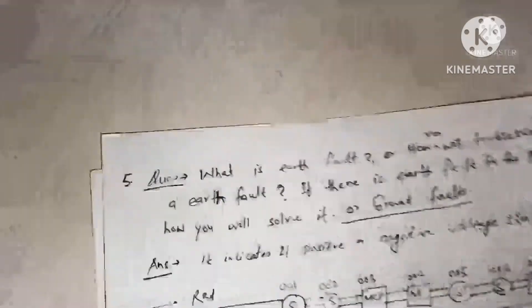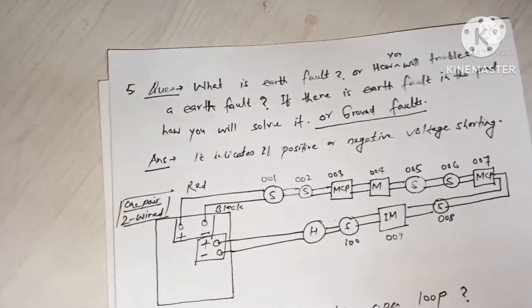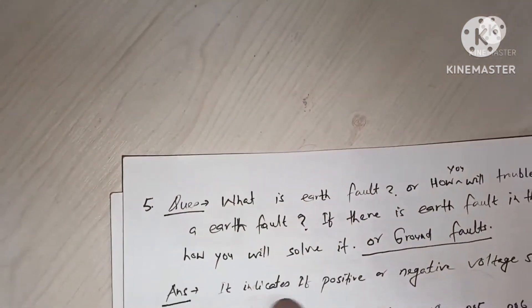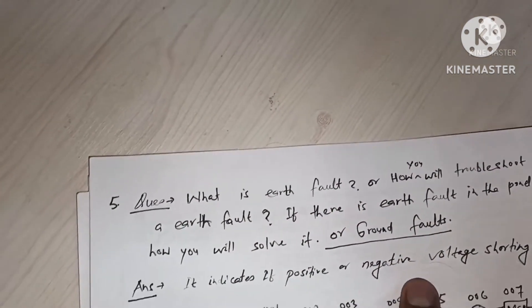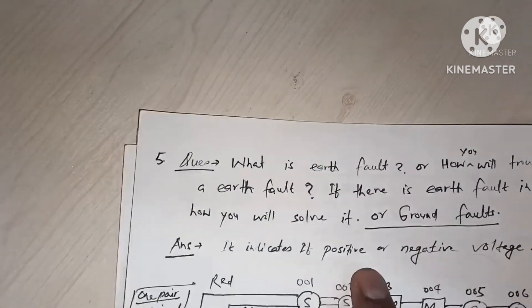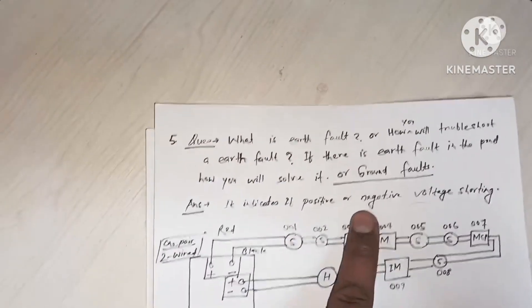So here, if it is in the loops, it will indicate that it is positive or negative voltage. Because ground fault means low resistance continuity to ground. Device ground fault means low resistance when you do ground.